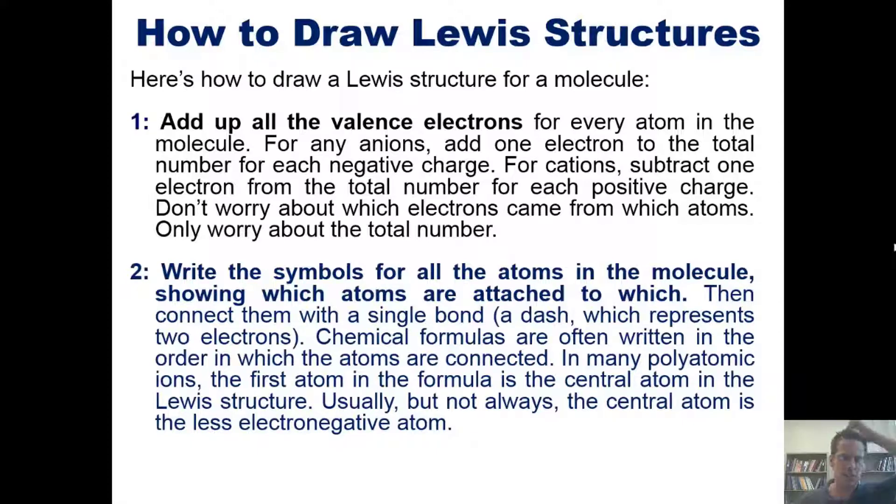Chemical formulas are often written in the order in which the atoms are connected. In many polyatomic ions, for instance, the first atom in the formula is the central atom in the Lewis structure. Usually, but not always, the central atom is the less electronegative atom.